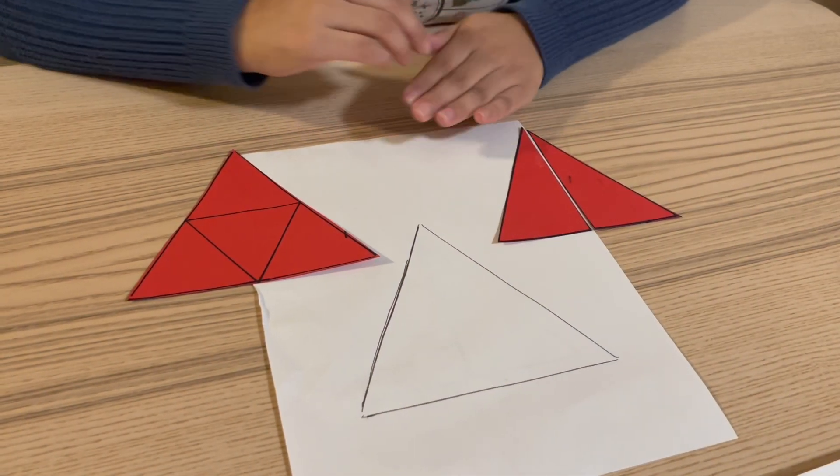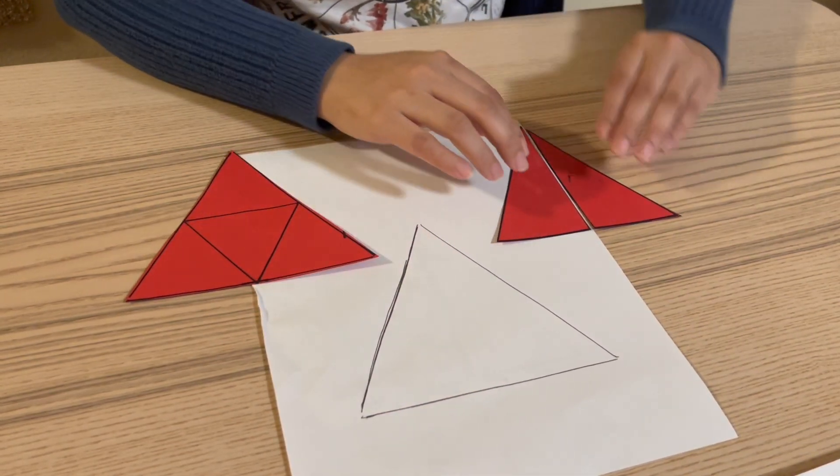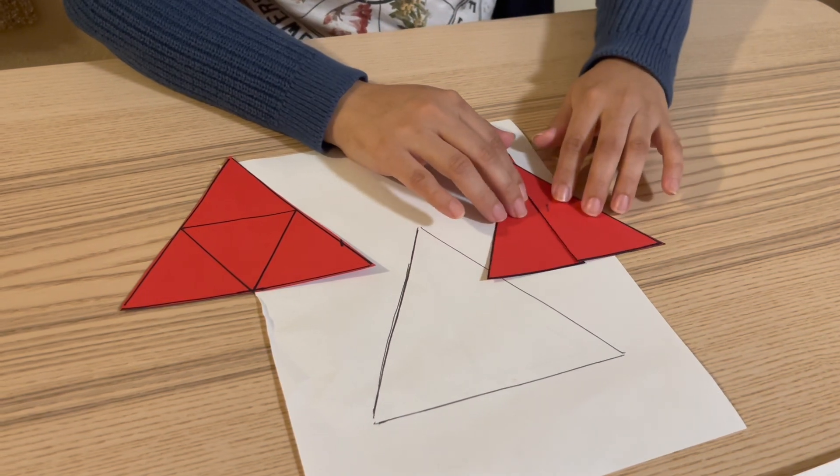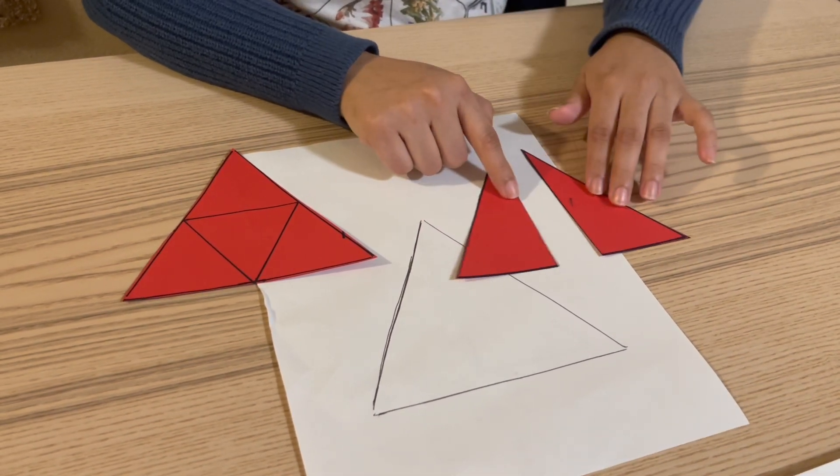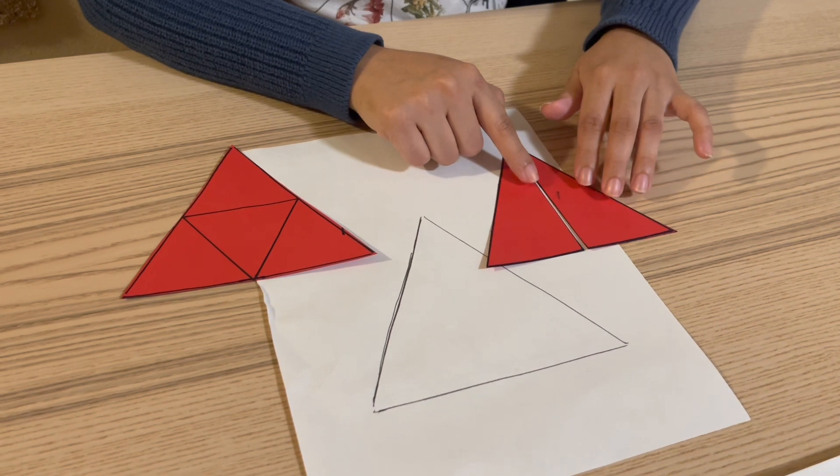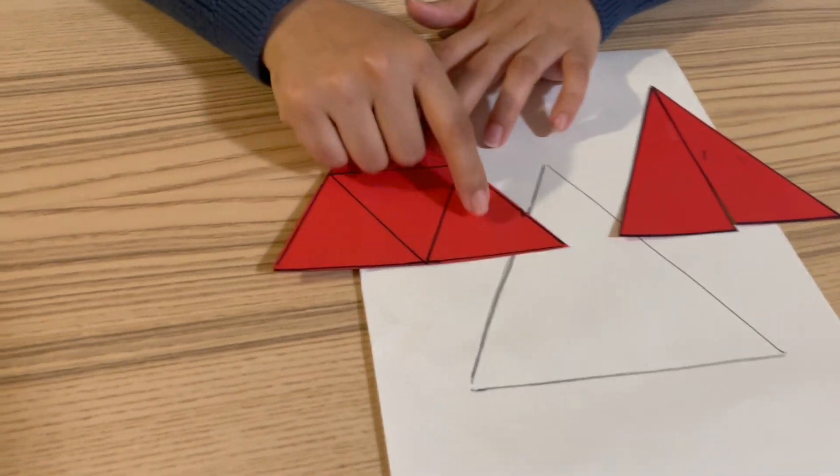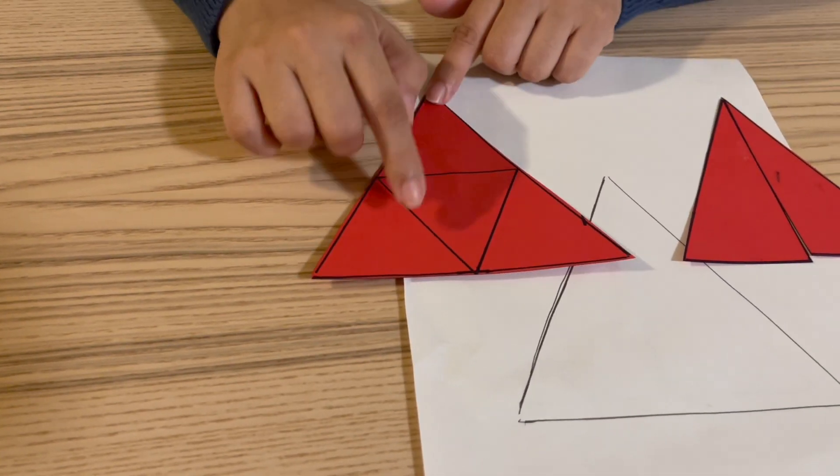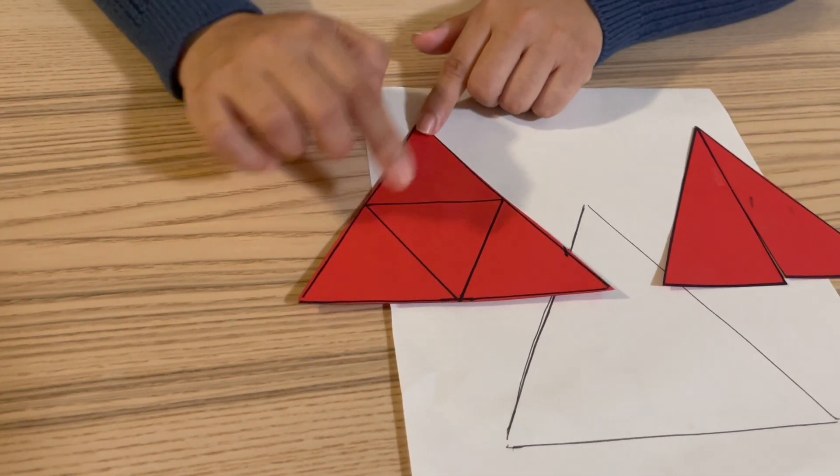One thing to consider when making your shapes is that you can use fewer puzzle pieces like I did for the triangle activity to make it easier, or you could use more puzzle pieces like this example to make it more challenging.